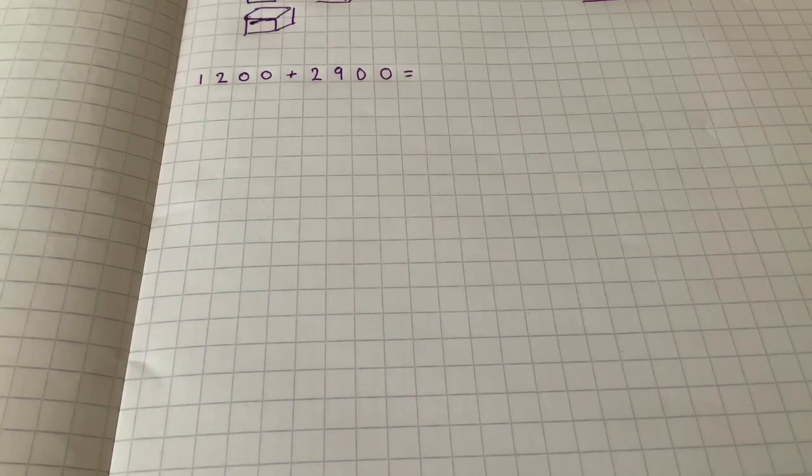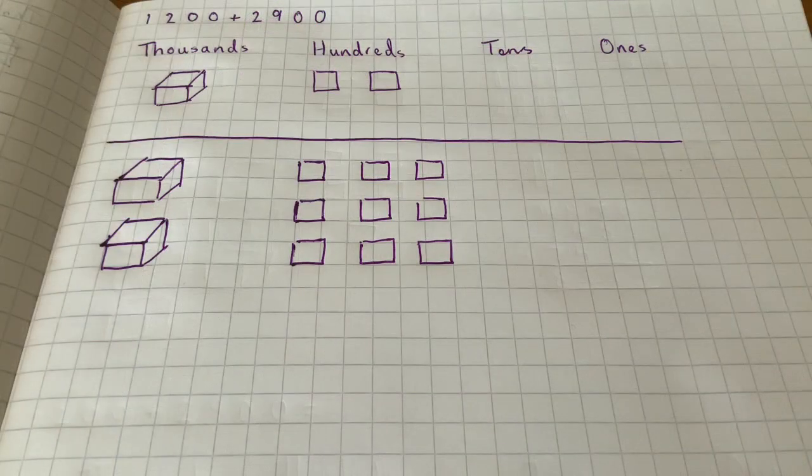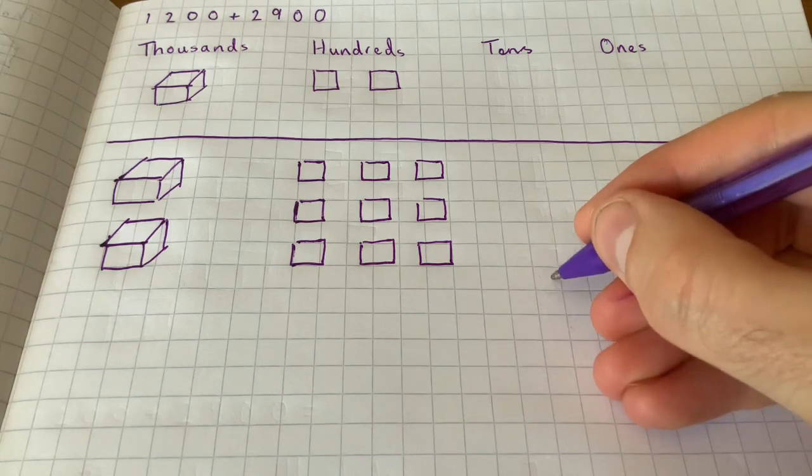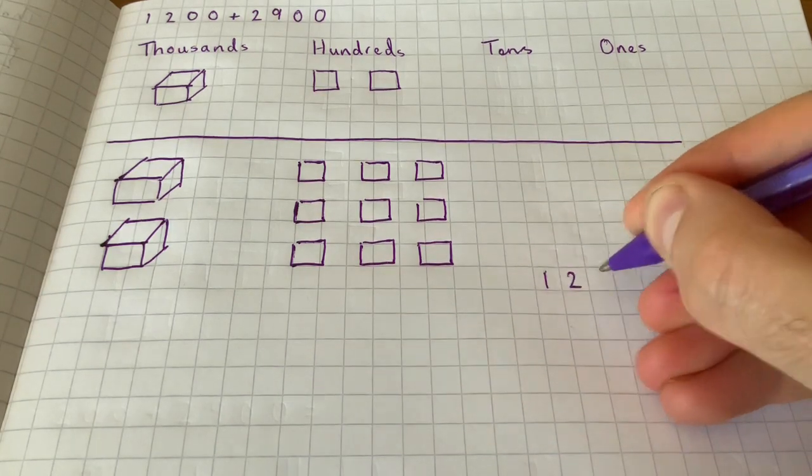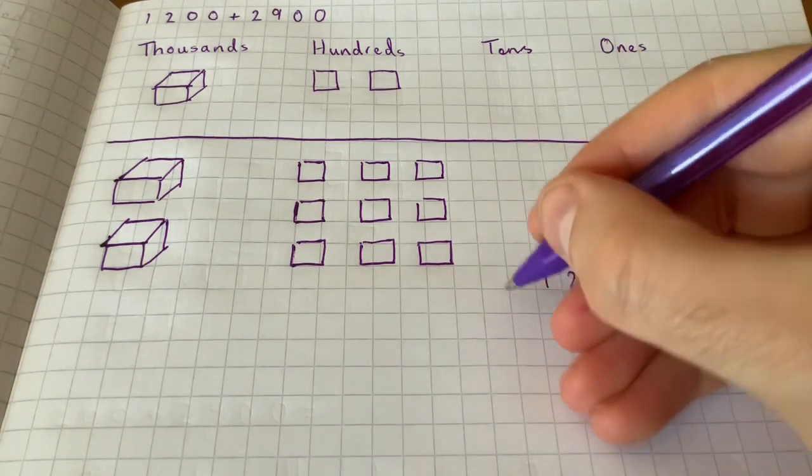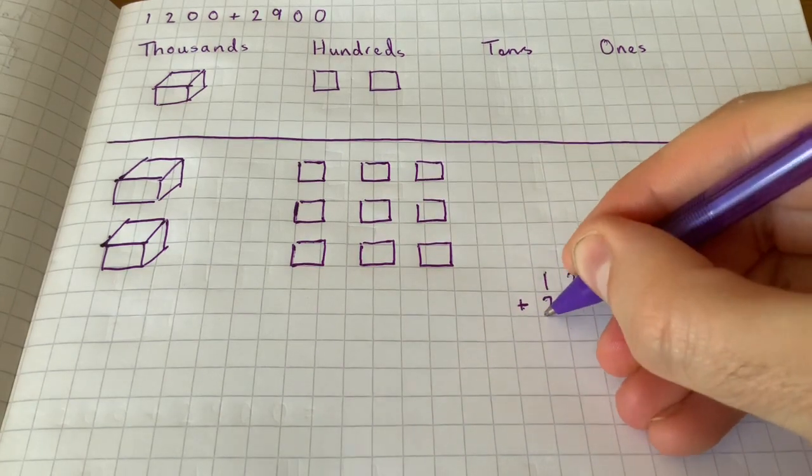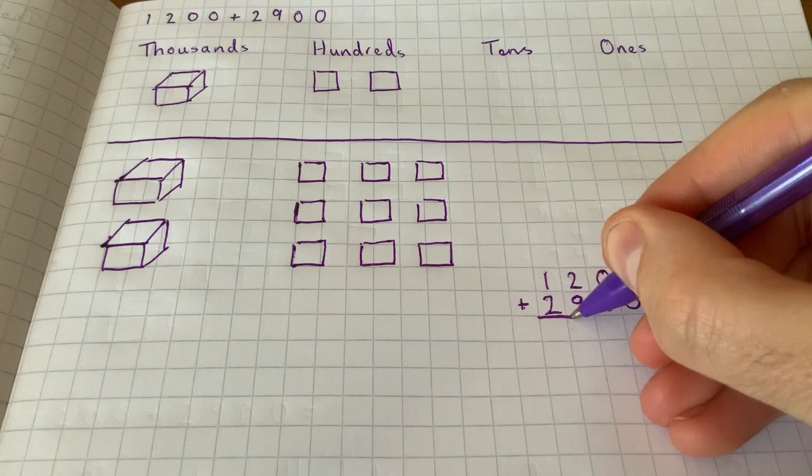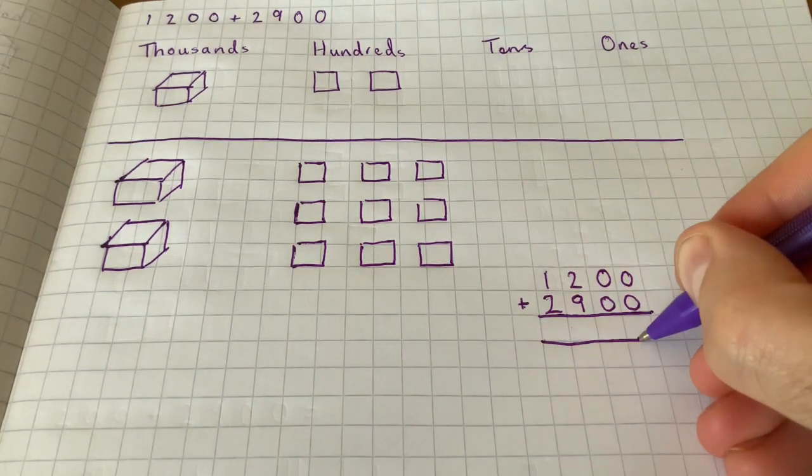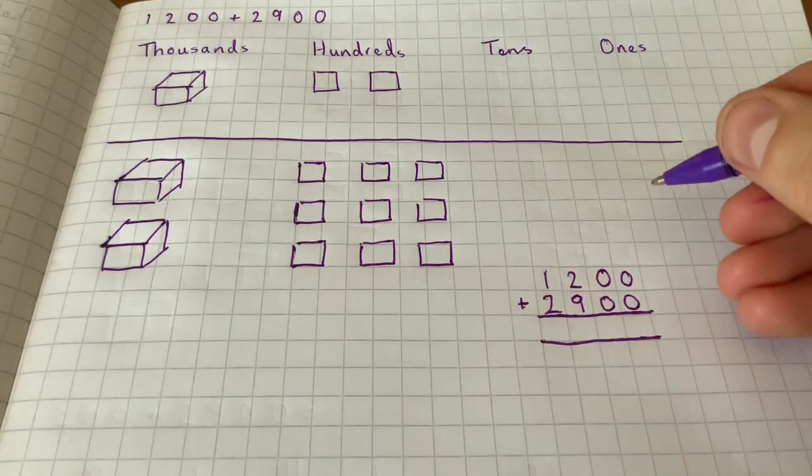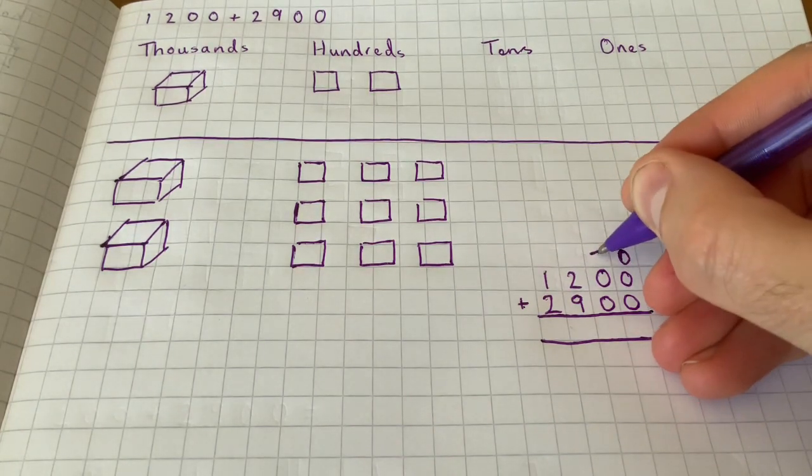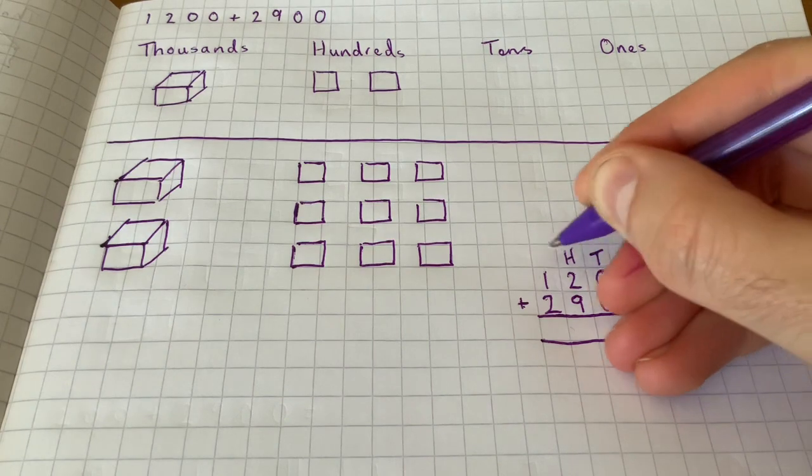So to add this one, we're going to write out our normal column method again. So I'm going to write out my one thousand two hundred add two thousand nine hundred, and of course I'll drop my line underneath there.